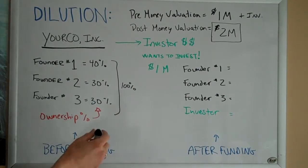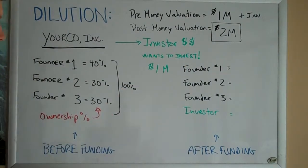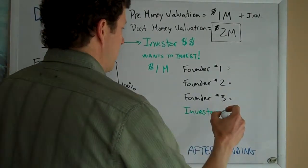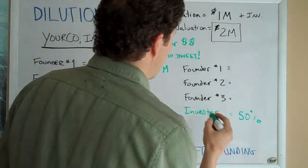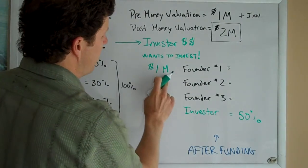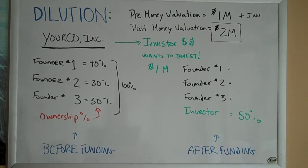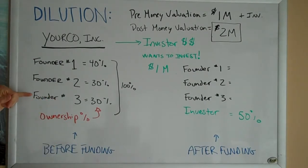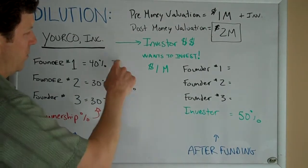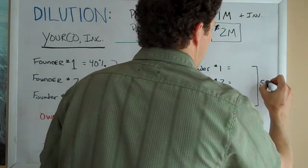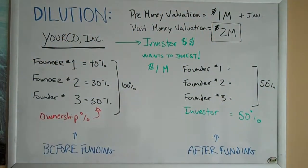So let's look at how these ownership percentages shake out after the funding event. Your investor puts in a million dollars and your company is now worth two million dollars. The investor's share of this company would be 50% — I'm getting that by dividing the amount the investor put in by the post-money valuation. So the investor, having put in a million dollars, owns half of this new entity worth two million dollars. The founders' combined 100% now represents only fifty percent of the new company.